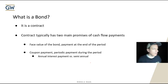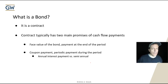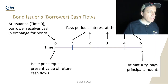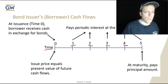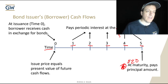So what is a bond? It's a contract. A contract typically has two main promises. It could just be a zero coupon, but for our purposes it usually has a terminal payment and fixed payments in between. The face value of the bond is the payment at the end of the period, and the coupon payments are the intermittent payments in between. You can think about the payments like this on a timeline: there's a payment here, here, here, and here for coupon payments, and then at maturity it also pays the principal amount — in the last example that was the $20, and the coupon was five and one-fourth percent.